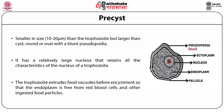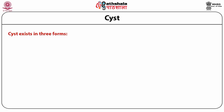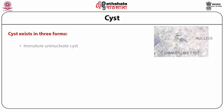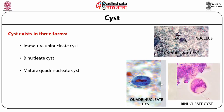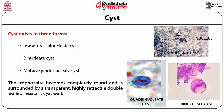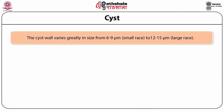The cyst exists in three forms: immature uninucleate cyst, binucleate cyst, and mature quadrinucleate cyst. The trophozoite becomes completely round and is surrounded by a transparent, highly retractile, double-walled cyst wall. The cyst wall varies in size: 6 to 9 µm for a small race, and 12 to 15 µm for a large race.